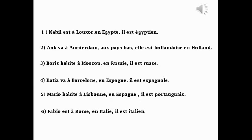Maintenant, on va lire toutes les phrases. 1. Nabil est à Louxor, en Égypte. Il est égyptien. 2. Una va à Amsterdam, aux Pays-Bas. Elle est hollandaise. 3. Boris habite à Moscou, en Russie. Il est russe. 4. Katia va à Barcelone, en Espagne. Elle est espagnole. 5. Mario habite à Lisbonne, au Portugal. Il est portugais. 6. Pablo est à Rome, en Italie. Il est italien.